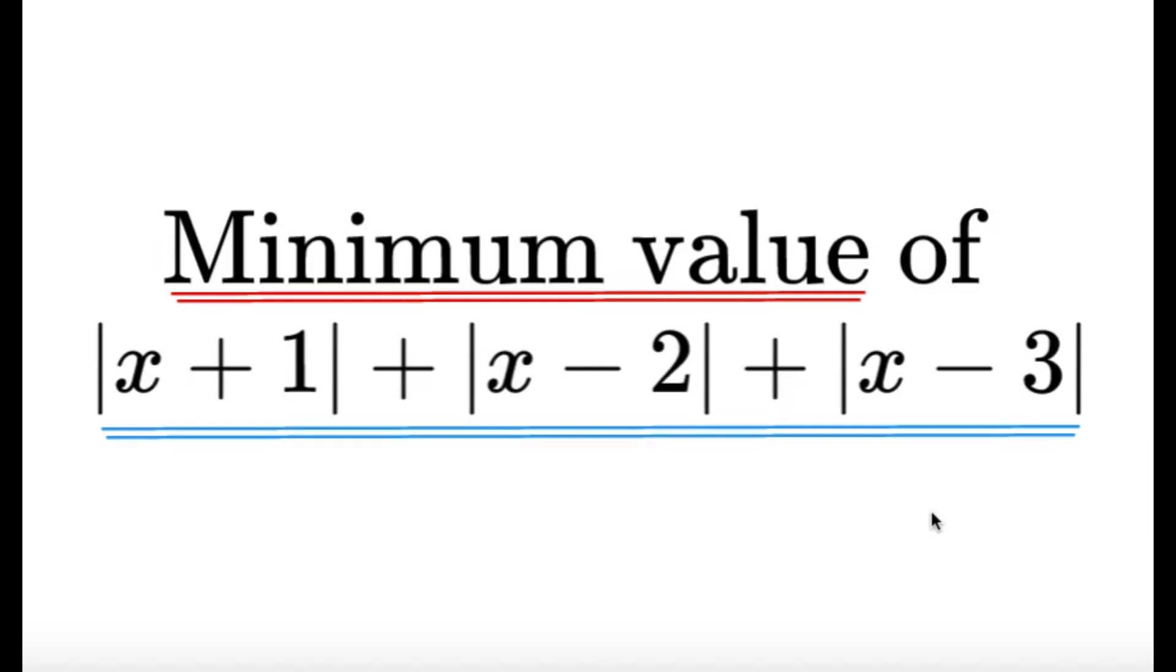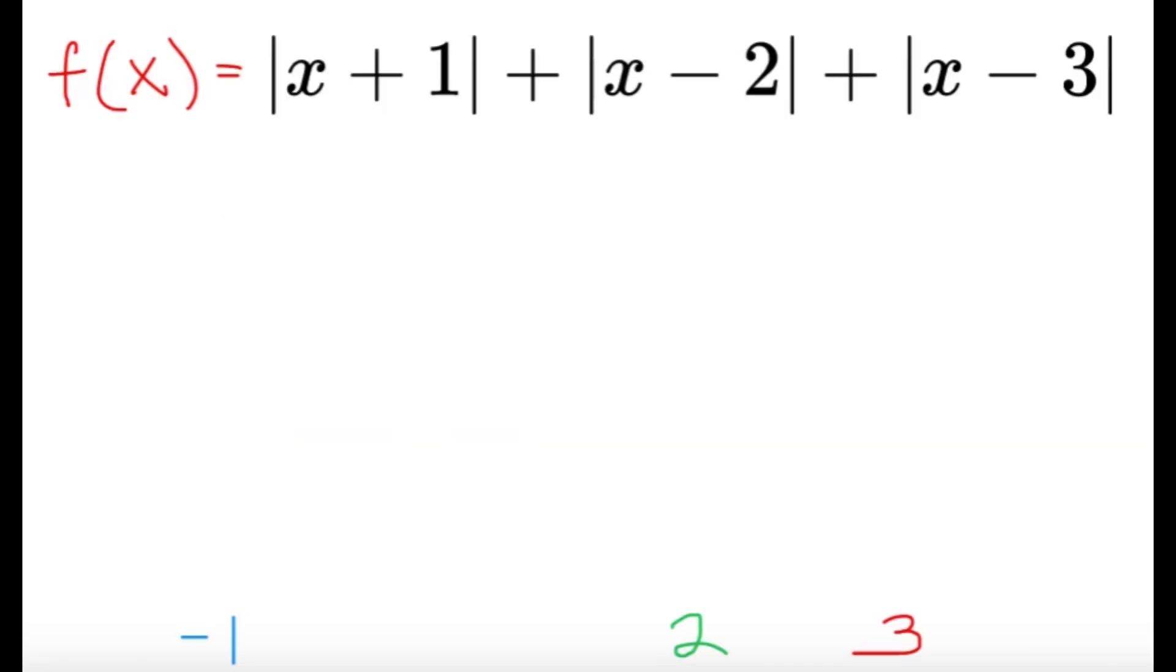Now, whenever we have absolute values, we tend to try to remove them. We can't literally just remove them, so we have to check for values in certain regions, and it concerns the critical values of the expression. For the first step, let's try to make the expression equal to a function of x. So, f of x equals the given expression.